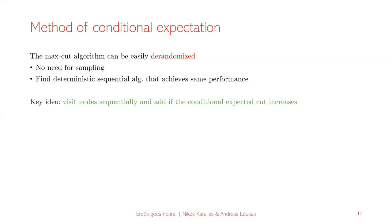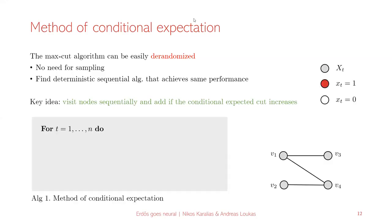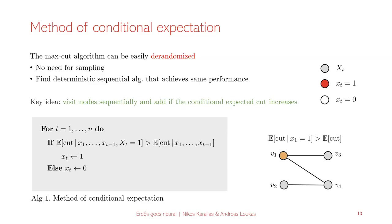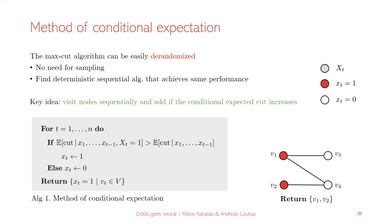You can also turn this into a randomized algorithm by sampling repeatedly. If you don't like randomized algorithms, you can derandomize this: you don't need to sample; you can have a deterministic sequential algorithm that gets the same performance. The way you do this is you fix an ordering, go through the nodes, and check whether your conditional expectation increases or not. For example, with a little graph of four nodes, everything starts as random variables with probability one half. You visit the first node, see that including it increases the conditional expectation, so you add it to the set. For the third node the inequality is reversed — the conditional expectation would decrease — so you take it out. The sets you get this way always have at least half the edges cut.